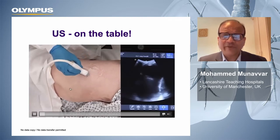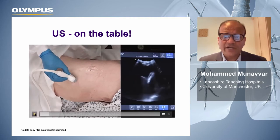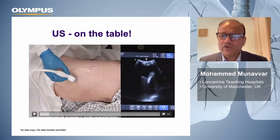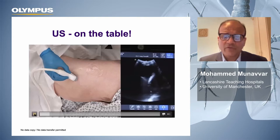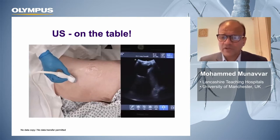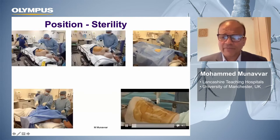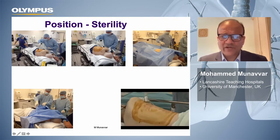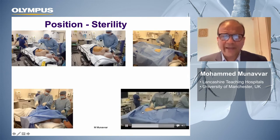The most important safety aspect of thoracoscopy is to learn how to perform ultrasound. Every operator performing any pleural procedure should learn thoracic ultrasound, for both safety and accuracy. You can see the diaphragm and the pleural cavity with pleural fluid on ultrasound, allowing you to accurately access the pleural cavity by performing thoracic ultrasound on the table just before the procedure. You need to know your ultrasound and perform it yourself. Perfect sterility must also be maintained throughout the procedure, as the pleural cavity is a completely sterile cavity.